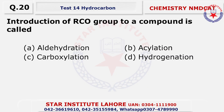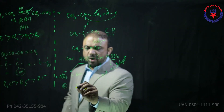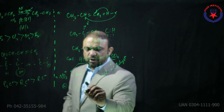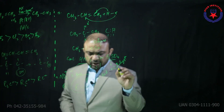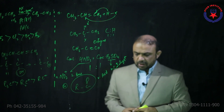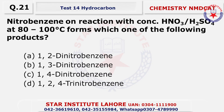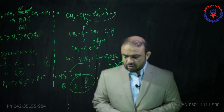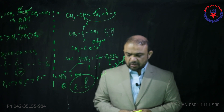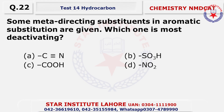Question 20/28: the RCO group is called the acyl group — so the RCO group is the acyl group, also referred to as acylation. Question 21: nitrobenzene can react with concentrated nitric acid at 80 to 100 degrees Celsius, producing 1,3-dinitrobenzene. Simple reaction.